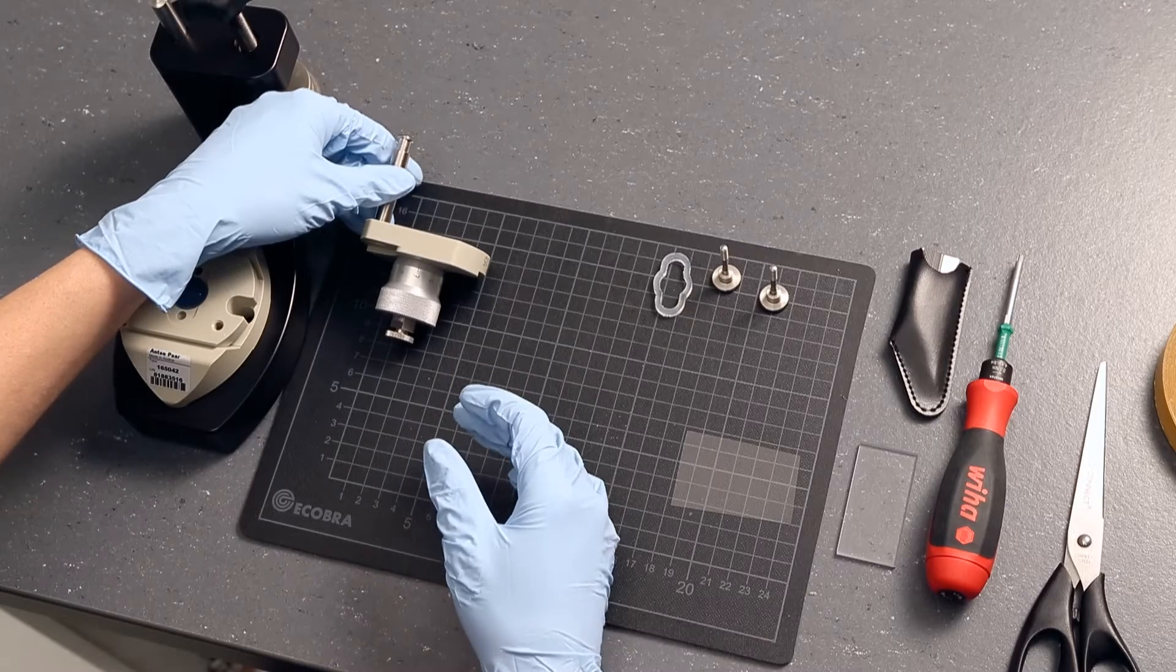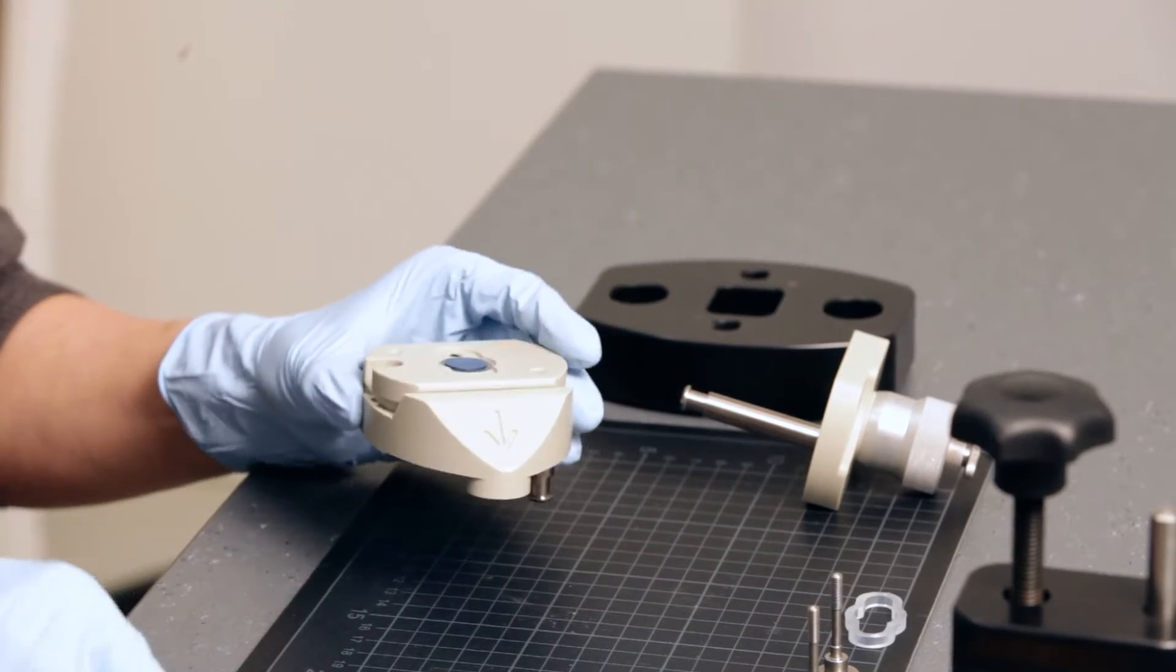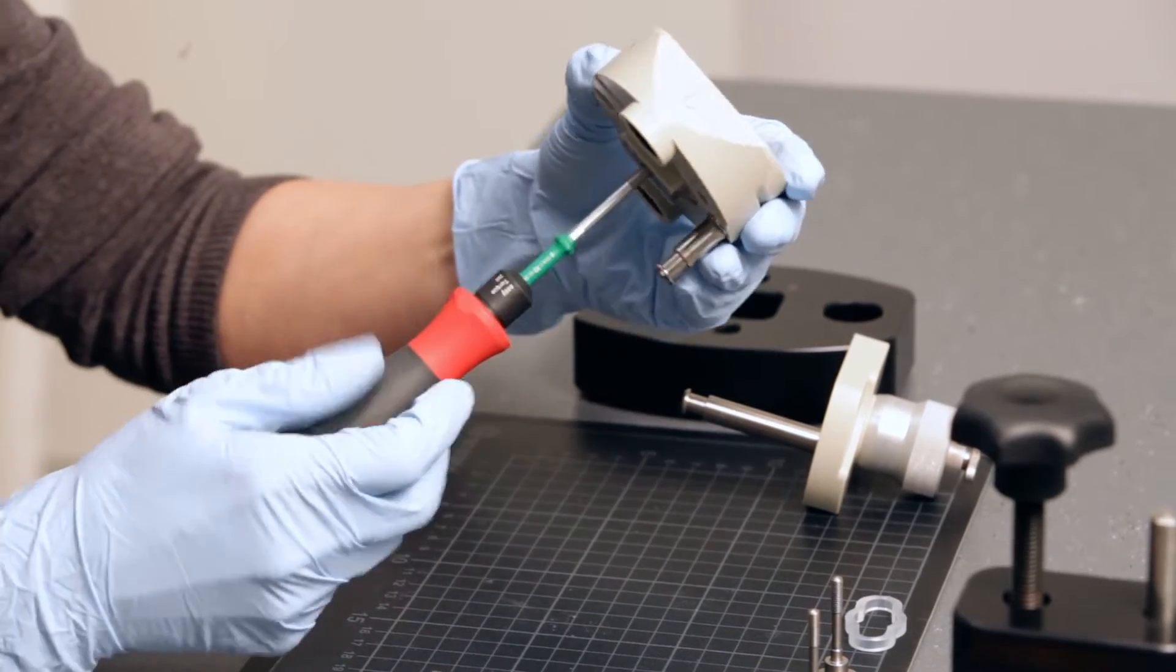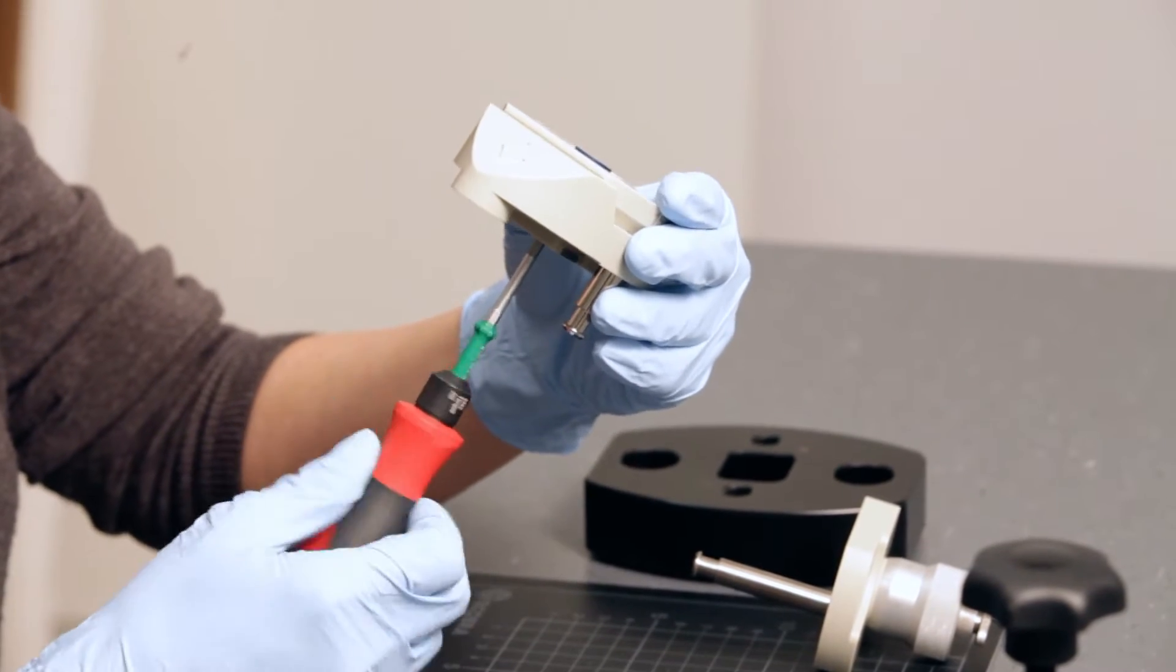Now remove the sample holders of both parts of the cell. Use the Torx T20 screwdriver to push the sample holder out of the lower part of the cell.